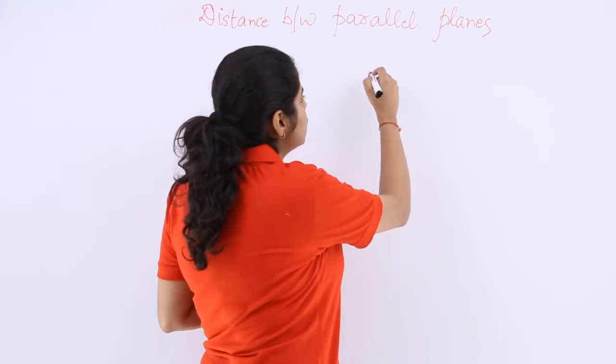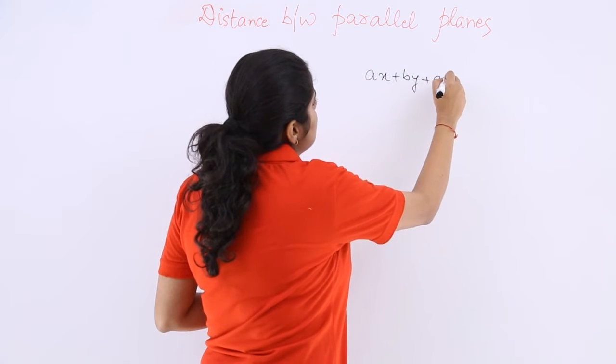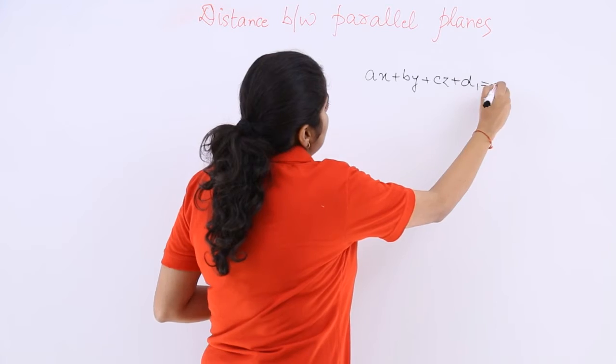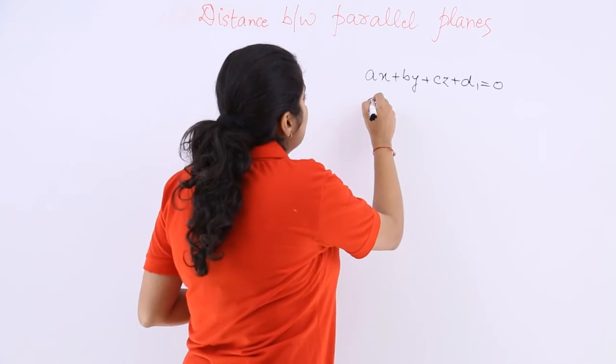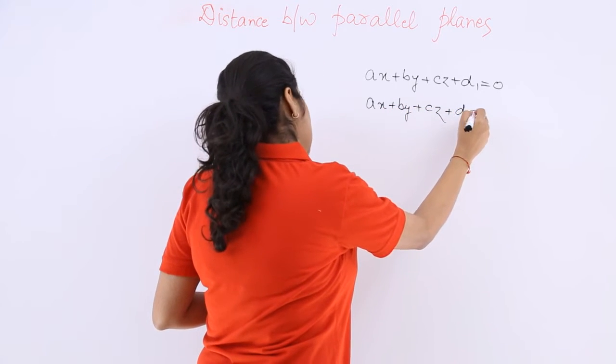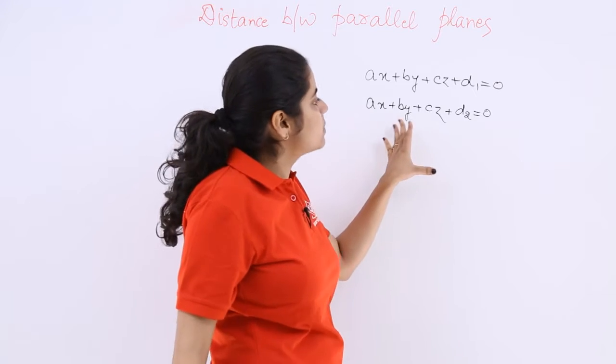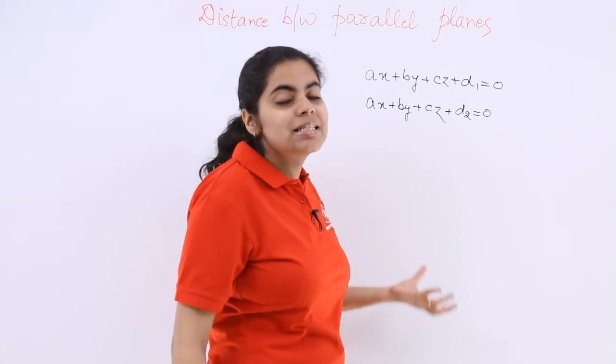So the equation of the first plane can be simply taken as ax plus by plus cz plus d1 equal to 0 and the equation of the second plane can be simply taken as ax plus by plus cz plus d2 equal to 0.